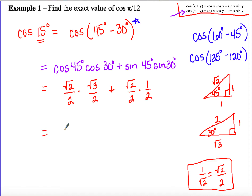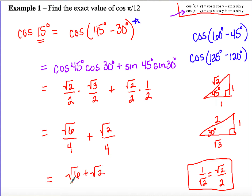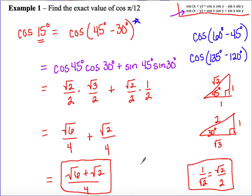Now combine everything. Multiplying out gives root 6 over 4 plus root 2 over 4. We can write that as one fraction: the quantity root 6 plus root 2, all divided by 4. Remember, root 6 and root 2 cannot be combined within their square roots, but we can combine them in the numerator. That's our final answer for example number 1.